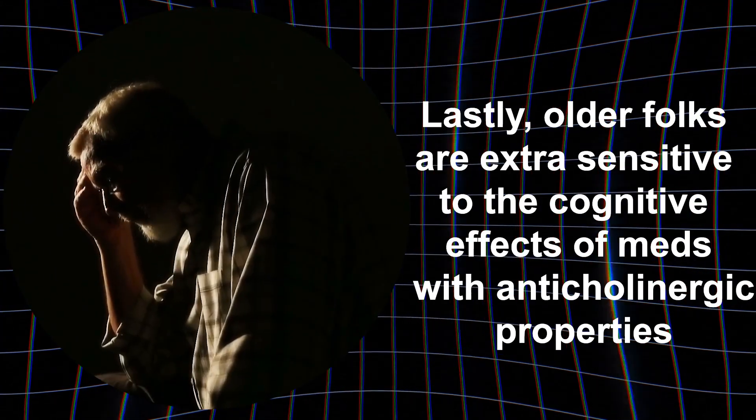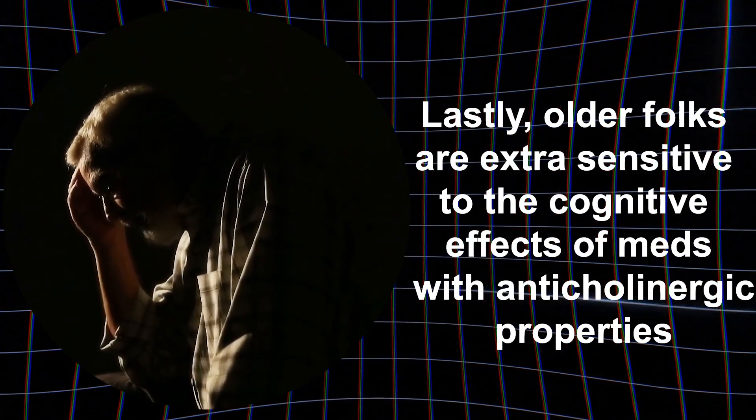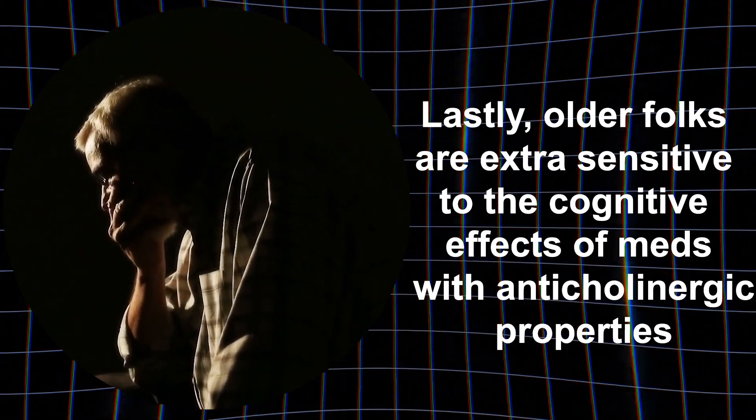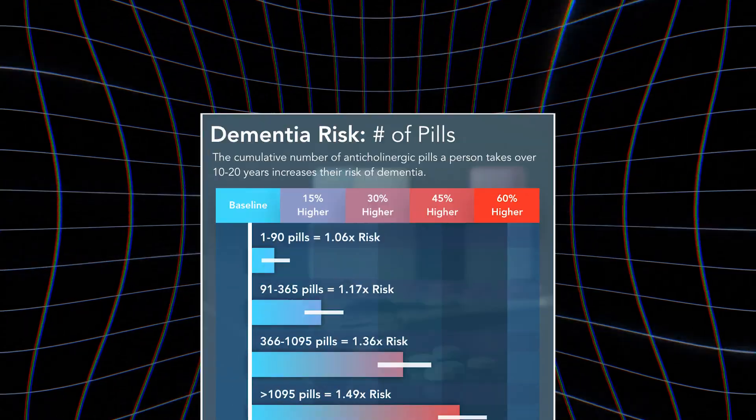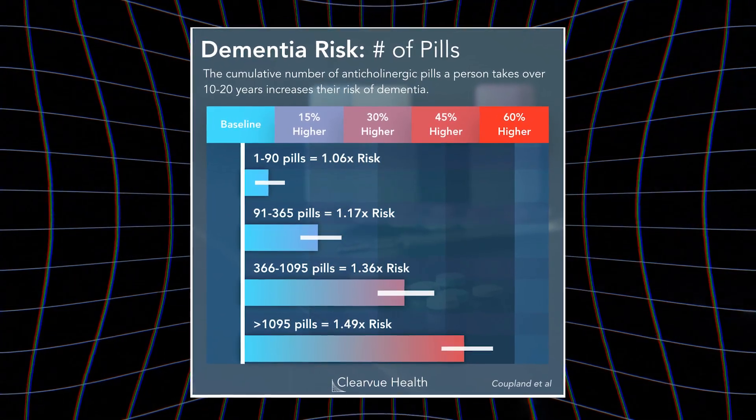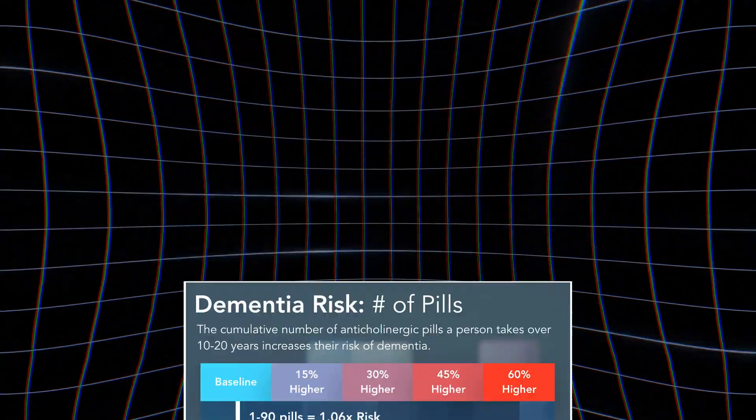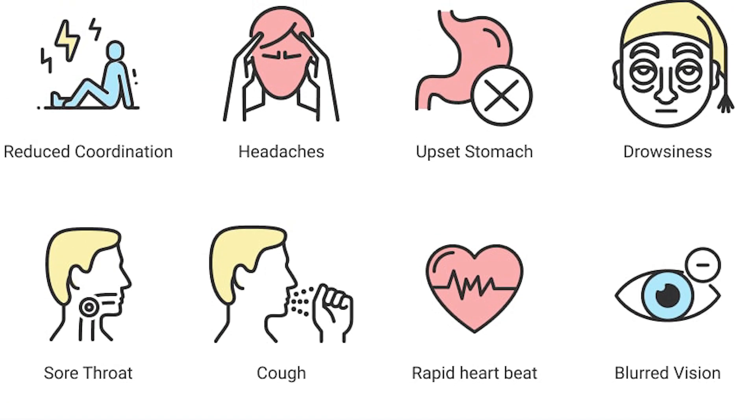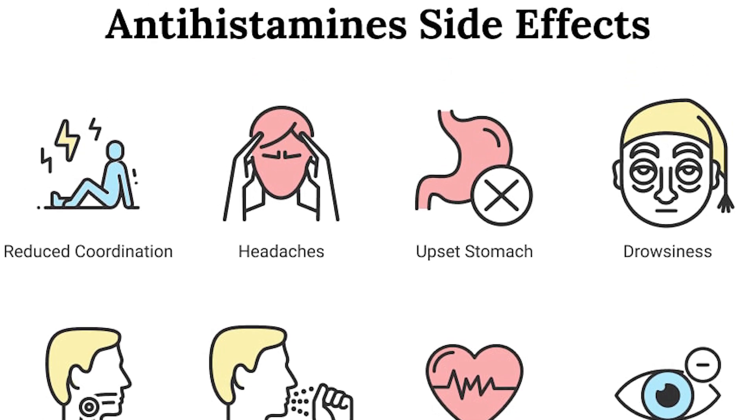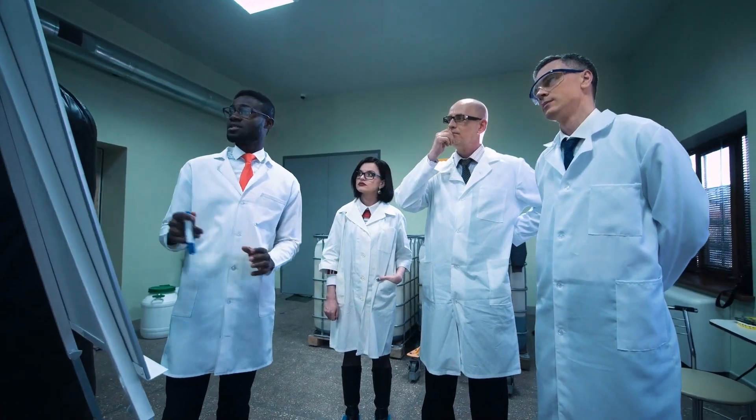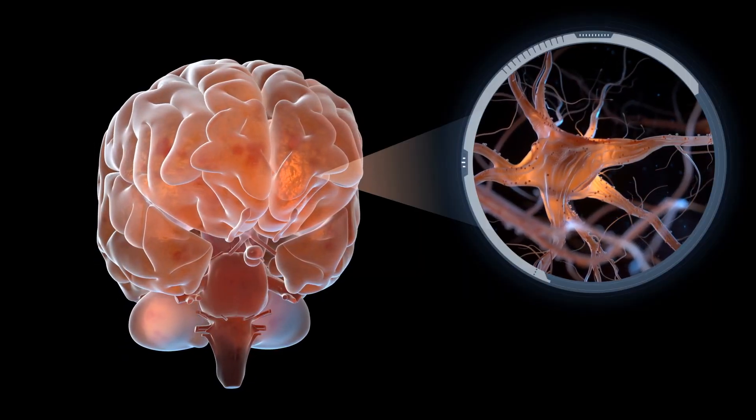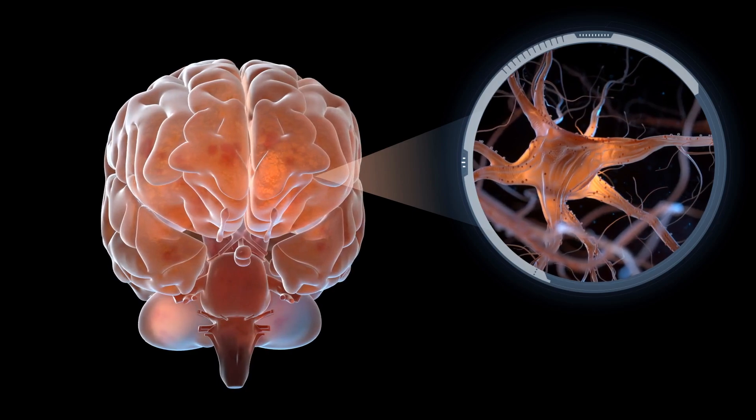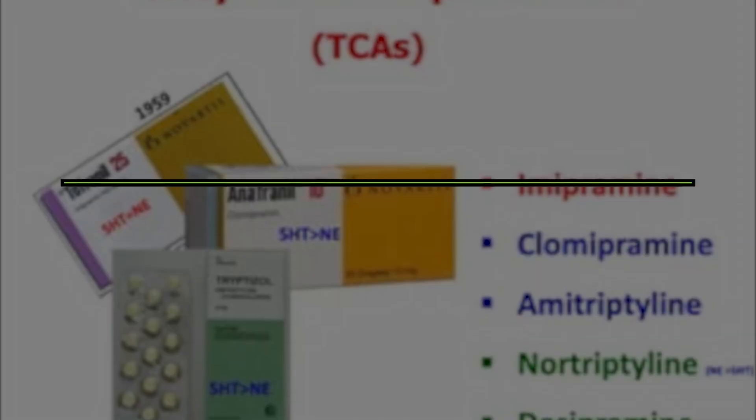Lastly, older folks are extra sensitive to the cognitive effects of meds with anticholinergic properties, so even low-grade stuff can hit them harder mentally. That also ups their risk for developing dementia from steady antihistamine use. So in summary, while the newer antihistamines might not make you as drowsy, scientists think consistent use over many years could subtly mess with acetylcholine signaling enough to impact memory and thinking as we age. Elderly folks need to be extra careful with them.